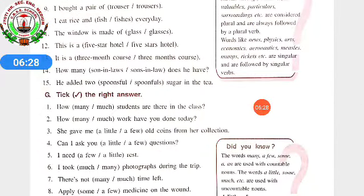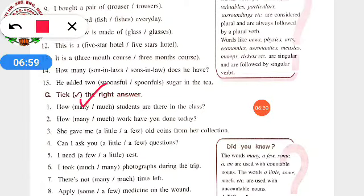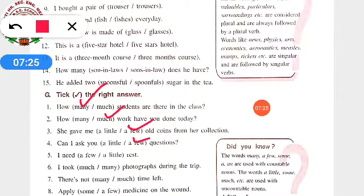Tick the right answer. Where to use 'many' and where to use 'much': many we use for things which we can count; much we use for things we cannot count. A little we use for things we cannot count; a few we use for things we can count. 'How many students are there in the class?' — yes, we can count students, so 'how many'. 'How much work have you done today?' — we cannot count work, so 'much'. 'She gave me a few old coins' — coins are countable. 'Can I ask you a few questions?' — questions are countable. 'I need a little rest' — we cannot count rest.